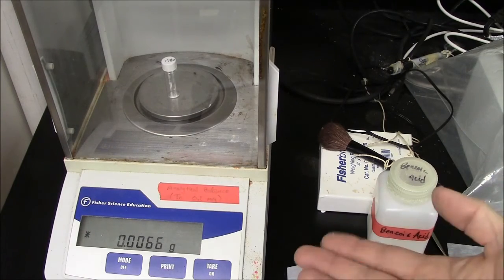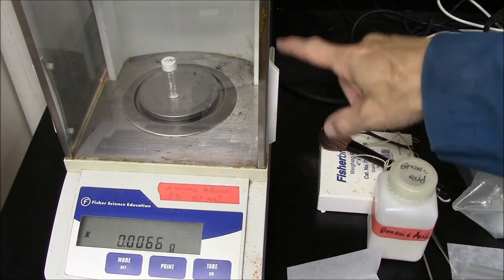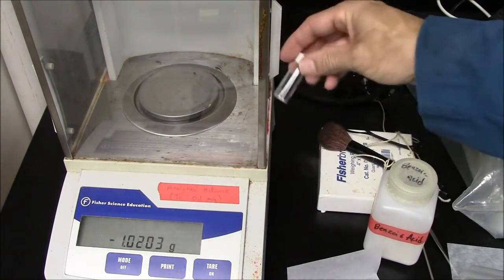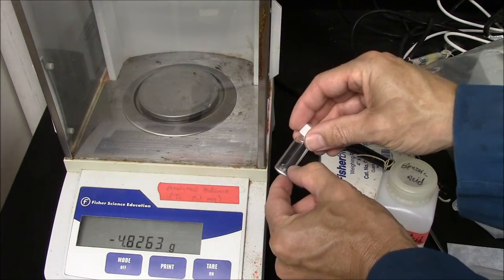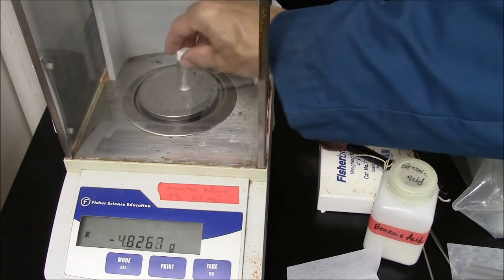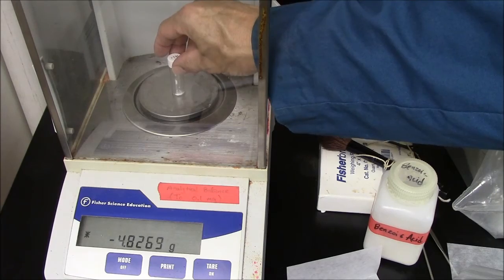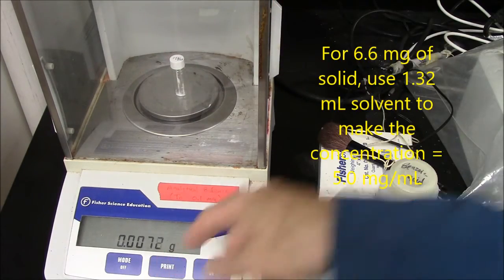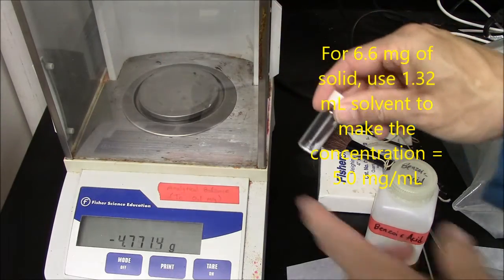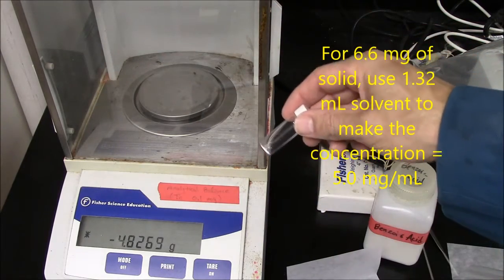Many students will take a long time to weigh out a sample because they think they're looking for a precise mass, 5.0 milligrams. Almost always, you'll take your solid and dissolve it in some solvent. If the desired concentration was 5 milligrams per one milliliter, you simply add additional solvent to make the concentration equivalent.